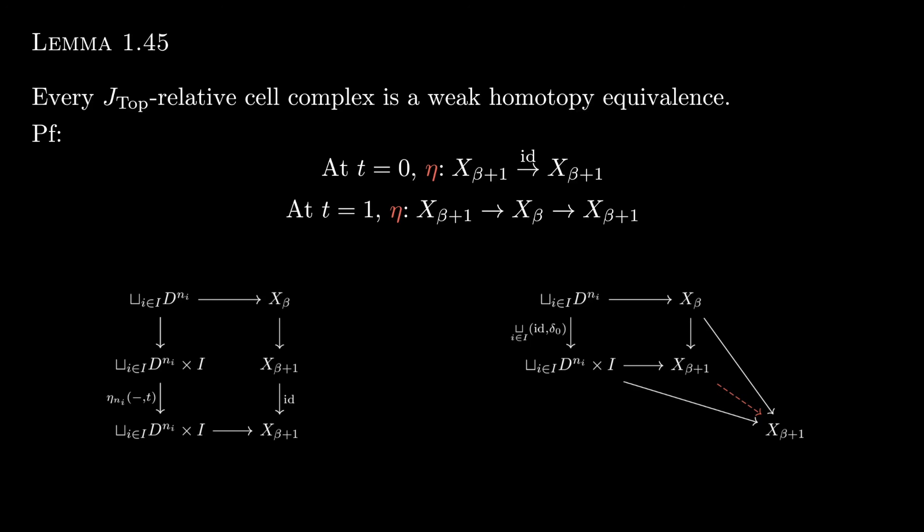And since there's such a diagram induced for each time in eta-n-i, time from 0 to 1, we have an induced left homotopy between the map that from X-beta plus 1 to X-beta to X-beta plus 1 again to the identity on X-beta plus 1. And so in conclusion, this shows that X-beta and X-beta plus 1 are weak homotopy equivalent.